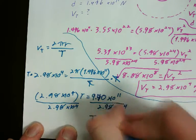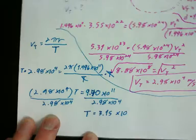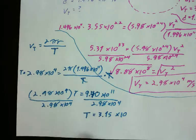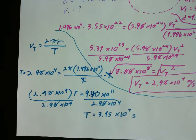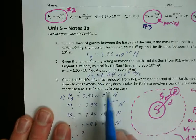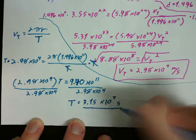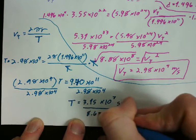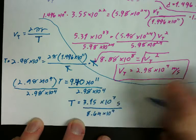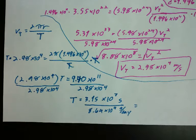9.40 times 10 to the 11th. And now to get T by itself, we're going to divide both sides by 2.98 times 10 to the 4th. We get the time to go around once, the period 3.15 times 10 to the 7th seconds. Now, that's not helpful. I don't have any clue how many seconds that is. So I gave you a conversion. I said there's 8.64 times 10 to the 4th seconds in a day.